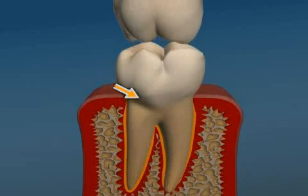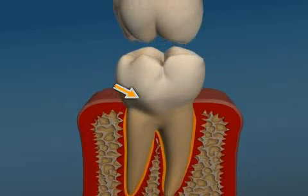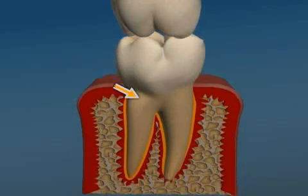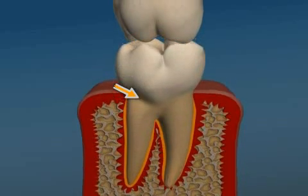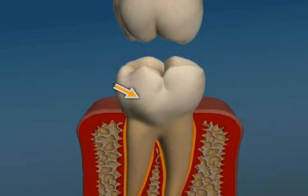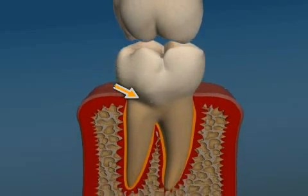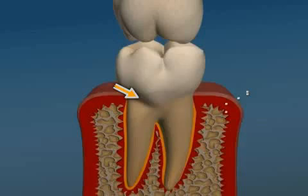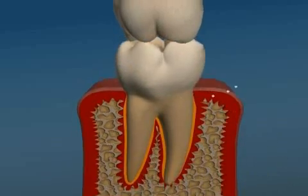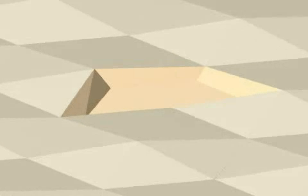Furthermore, this area — the enamel cement border — is frequently exposed to a leverage effect during chewing movements. For example, if the leverage effect is too high because of a malocclusion, or if the dental enamel is too weak because of an individual anomaly in the enamel prisms, part of the dental enamel may in fact break off, resulting in wedge-shaped defects.